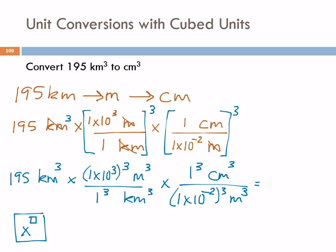And then I'm going to go divide by 1EE minus 2, and I'm going to press this guy again, and I'm going to cube it, and then I'm going to press equals. And I'm going to end up with 1.95 times 10 to the 17th cubic centimeters. Anybody else get that answer?